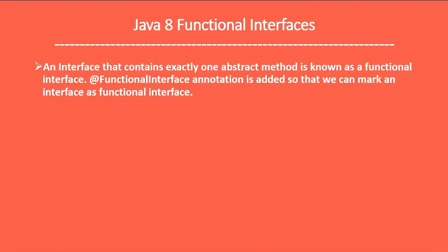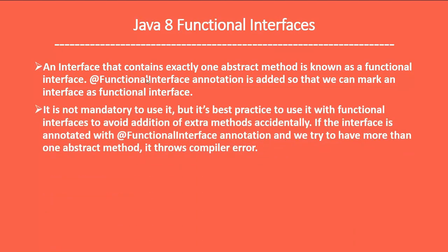An interface that contains exactly one abstract method is known as a functional interface. The @FunctionalInterface annotation is added to mark an interface as a functional interface. Adding this annotation is not mandatory, but it's a best practice to use it to avoid accidentally adding extra methods. If the interface is annotated with @FunctionalInterface and we try to add more than one abstract method, it throws a compiler error.